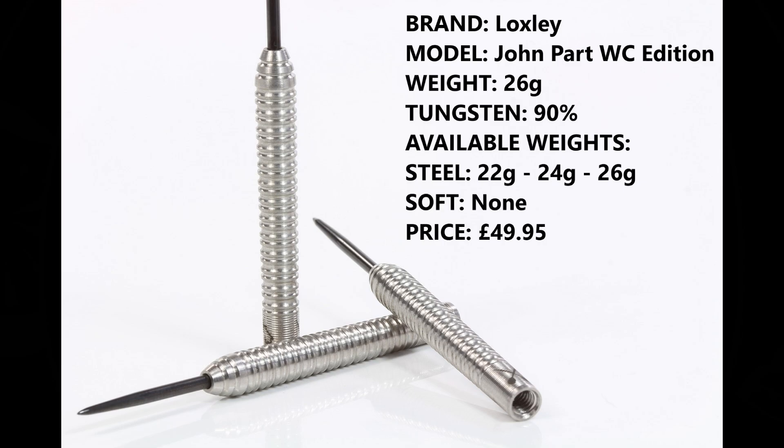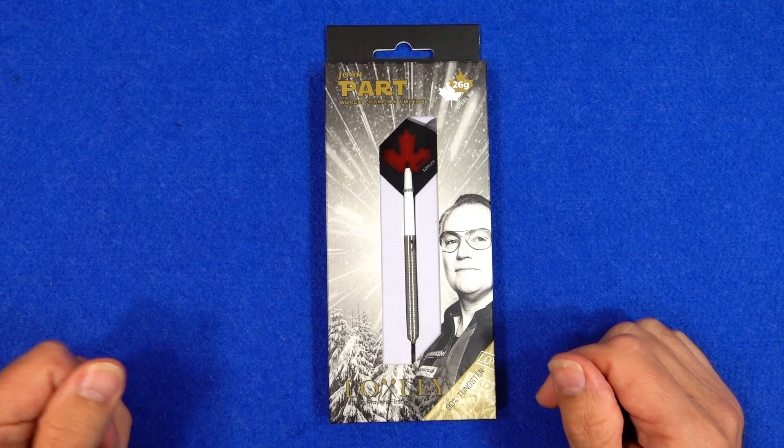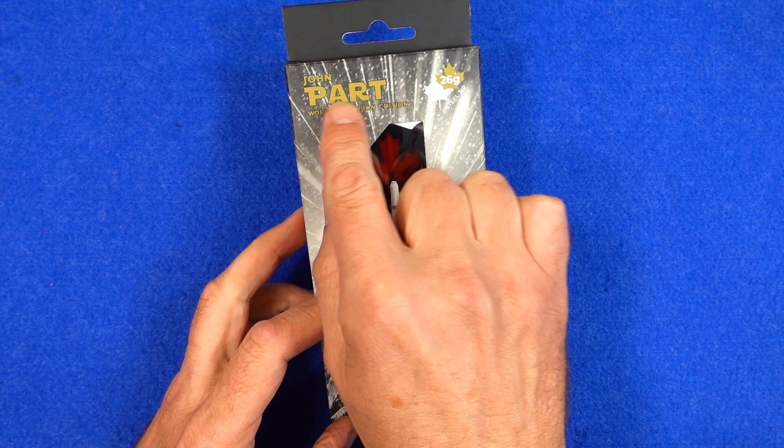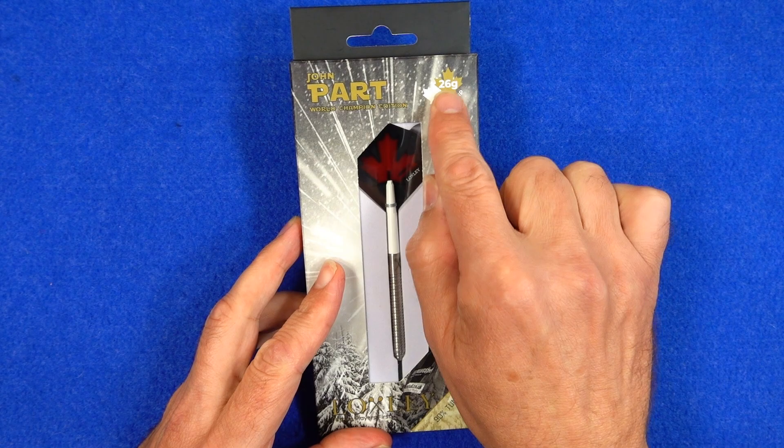So I'm reviewing the 26 gram, the 90% tungsten. You can also get them in 22 gram and 24 gram. There is no soft tip and they retail for £49.95. So the darts come in this slimline cardboard packaging. I like a couple of neat touches. They've got the text in the style of the Star Wars writing, and they've also got the maple leaf on there for the weight part.